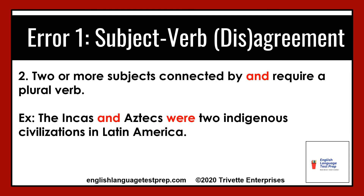Point number two: two or more subjects connected by AND, a conjunction, require a plural verb. Plural subject, plural verb. Example: the Incas and Aztecs were two indigenous civilizations in Latin America. You have a compound subject with the conjunction AND, so that makes it a plural subject, which requires a plural verb.